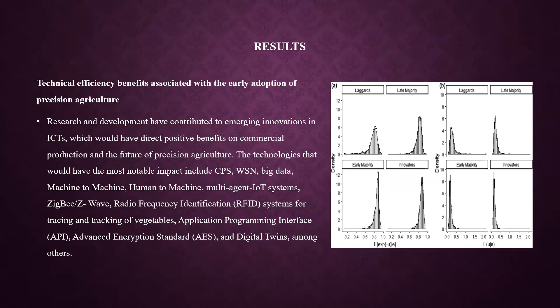The results highlight the technical efficiency benefits associated with early adoption of precision agriculture. Resources and development have contributed to emerging innovations in ICTs with direct positive benefits on commercial production and the future of precision agriculture. Technologies with the most notable impact include CPS (Cyber-Physical System), WSN (Wireless Sensor Network), Big Data, Machine-to-Machine, Human-to-Machine, Multi-Agent IoT System, ZigBee or Z-Wave, Radio Frequency Identification System for tracing and tracking of vegetables, Application Programming Interface, Advanced Encryption Standards, and Digital Twins.